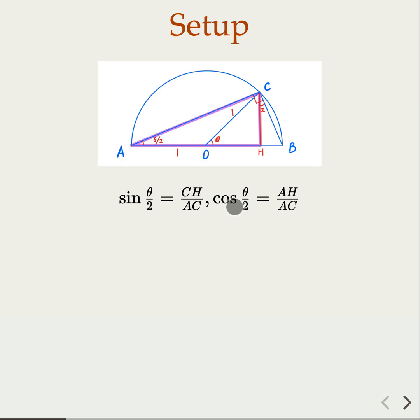Now how do we calculate the length of AC? We use Pythagorean theorem. So first in the smaller triangle here, this highlighted triangle here, we know that by definition cosine θ is going to be OH over OC, but OC is the radius.